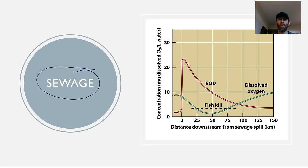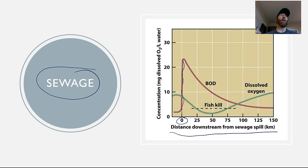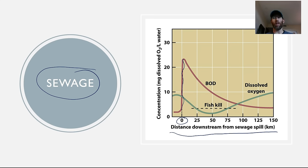This graph shows a sewage spill in a stream. The x-axis is the distance downstream from the sewage spill — mile zero is where we have a leaking sewer pipe. Right at the location of the sewage spill, you see a big spike in biological oxygen demand. Sewage contains lots of plant and algal nutrients, so we get a big spike in plant and algal growth in the stream. The result is an algal bloom; as that algae dies, bacteria come in and consume it, using up a lot of the oxygen. The demand for oxygen is caused by the rapid decomposition of dead and decaying algae.